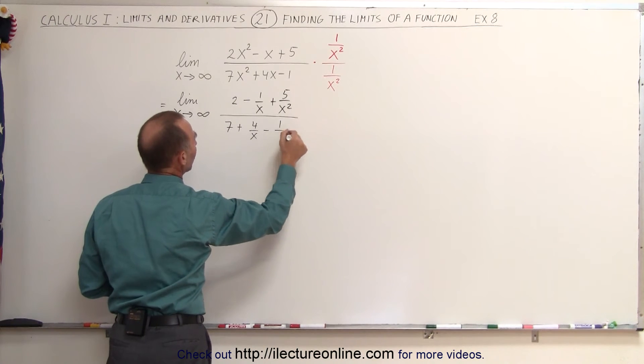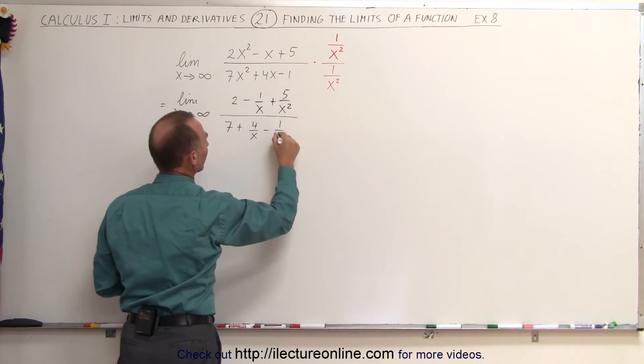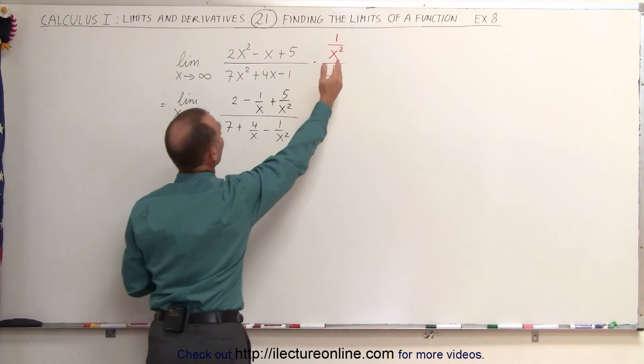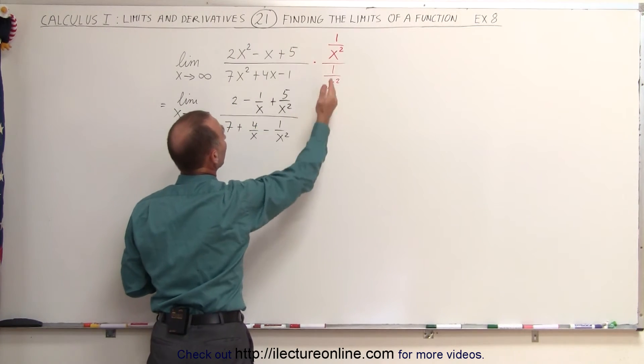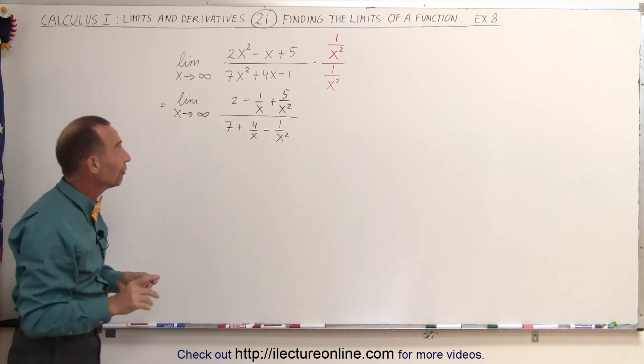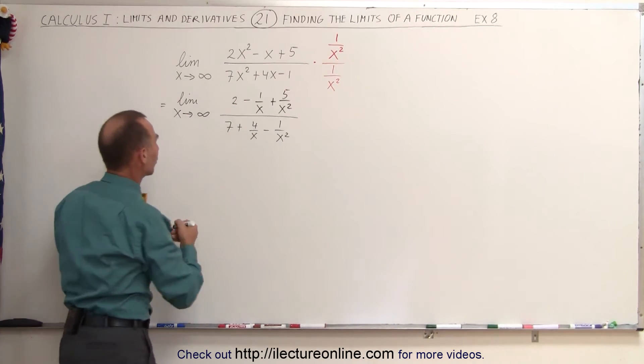And then 1 minus 1 divided by x squared. So what we did now is we multiplied 1 over x squared times every term in the numerator, 1 over x squared times every term in the denominator. And now it's in a form that we can plug in the limit. So let's go ahead and do that.